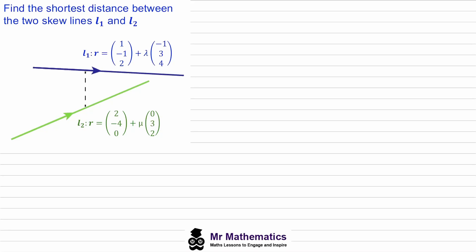In this video I'm going to show you how to find the shortest distance between two skew lines. The fact that they are skew means that the lines are not parallel and they'll never intersect. The shortest distance is where the angle between the two lines is a right angle, so even though they're separated in space, they are perpendicular to each other at that shortest distance.